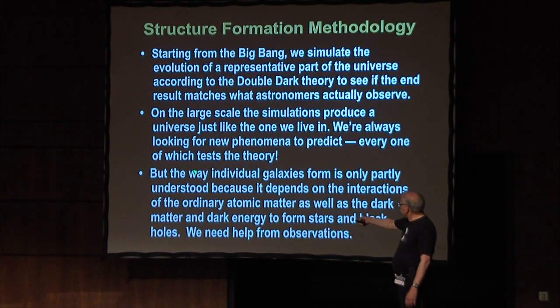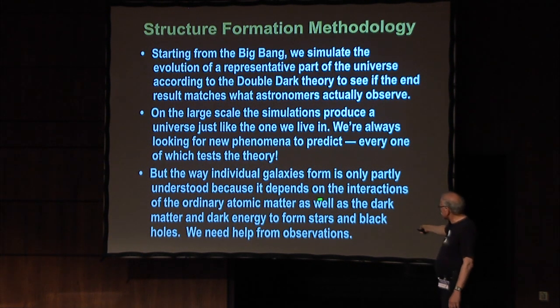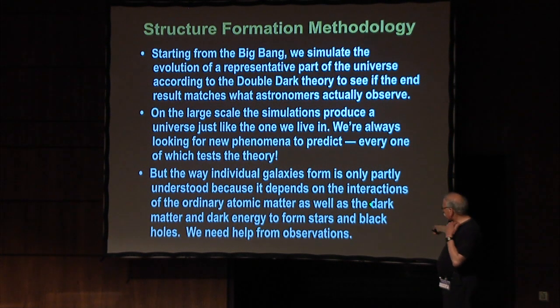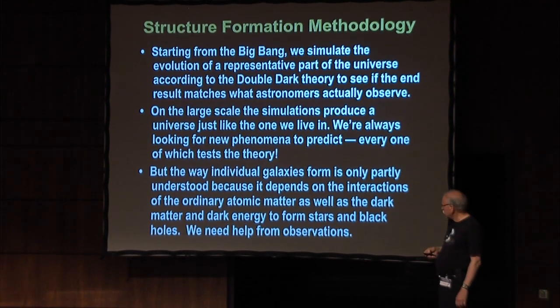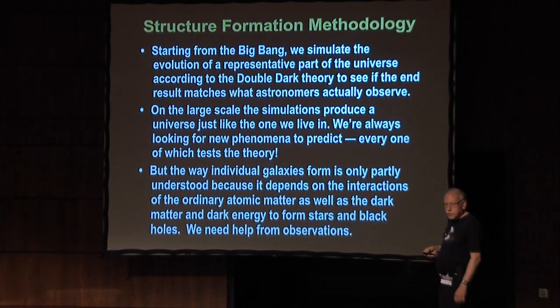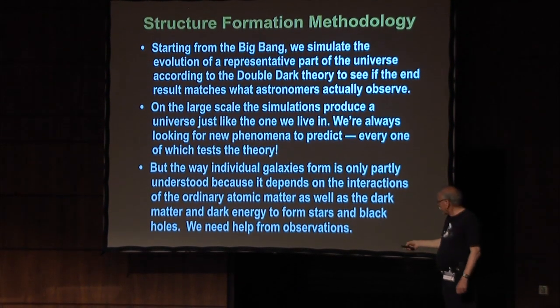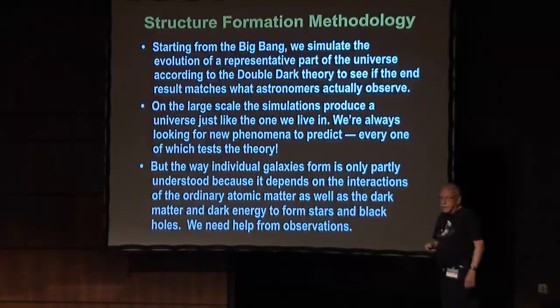The way individual galaxies form is only partly understood, because it depends on the interactions of ordinary atomic matter as well as dark matter and dark energy to form stars and black holes. As Joe Silk explained, this is a difficult problem. Although cold dark matter is basically pure thought, here we needed help from observations.